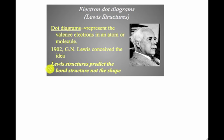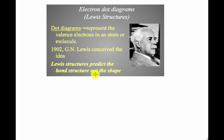Lewis structures were really a way to explain electrons to students — he found it easier to represent them as dots surrounding elements. One last thing to keep in mind before we start: Lewis structures predict the bond structure, not the shape. The interpretation of shape is going to come in the second part.